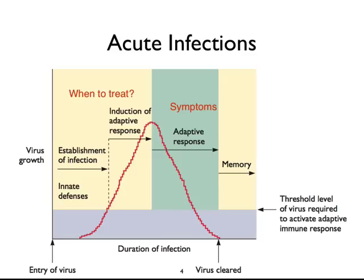The host begins to respond, but infection has already started, so the virus is doing what it wants to do. When do you treat somebody? Unfortunately, you treat them before you know they're infected, because once you intercede at this point, the virus has done what it's going to do. Most pathogenesis results from virus-inducing host responses — cytokines, complement-killing cells. You begin to see symptoms after the virus has reached its peak titer, the adaptive response initiates, and the most important outcome for the host is that the virus is cleared and memory is established.